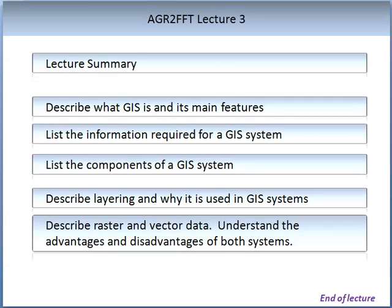So this brings us to the end of this lecture. To summarise, I hope that you now understand the following: you can describe what a GIS is and its main features; list the information required for a GIS system to operate; list the components of a GIS system; describe in detail what layering is and why it is used in GIS systems; and describe the differences between raster and vector data, including the advantages and disadvantages of both and where they may or may not be applied.